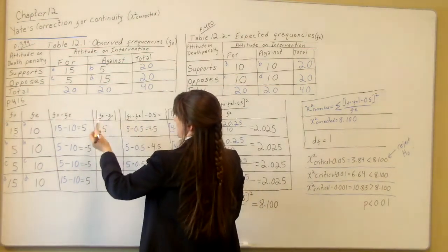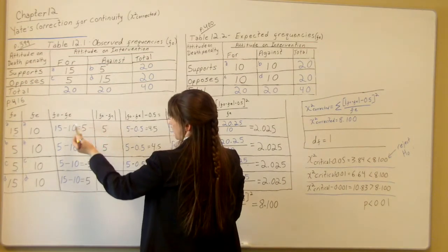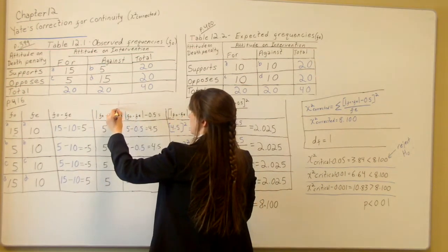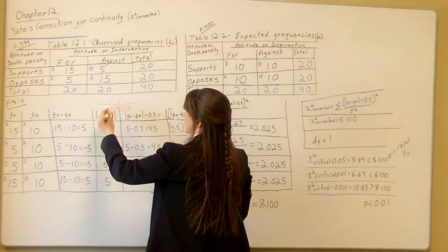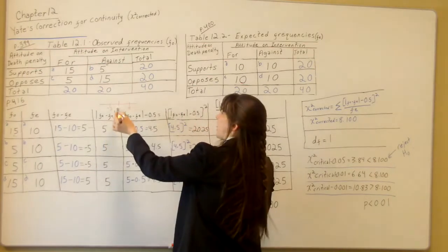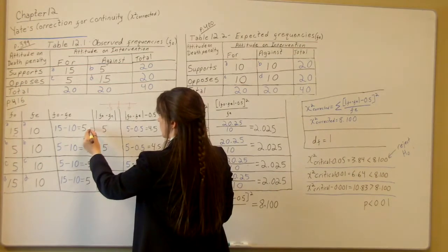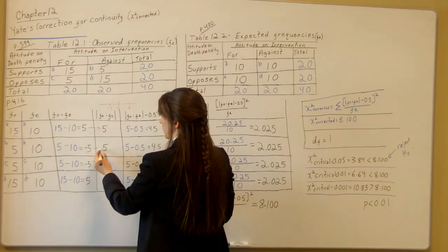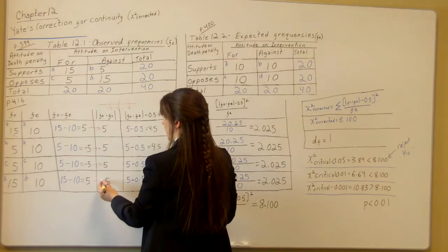The next column is the absolute value of the previous column — the absolute value of observed frequency minus expected frequency. Remember, absolute value is the distance from zero on a number line: both 5 and negative 5 are 5 places from zero. So working down: the absolute value of 5 is 5, the absolute value of negative 5 is 5, the absolute value of negative 5 is 5, and the absolute value of 5 is 5.